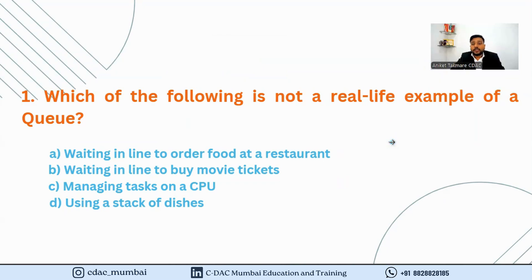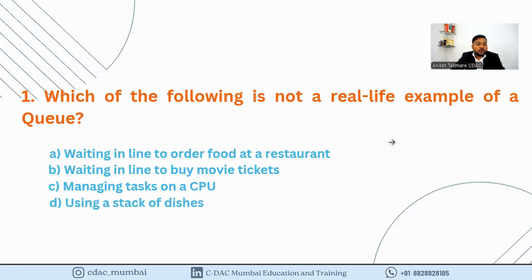The question is: which of the following is not a real-life example of a queue? A queue is a data structure which follows the FIFO principle — First In, First Out. The options are: A) waiting in a line to order food at a restaurant, B) waiting in a line to buy movie tickets, C) managing tasks on a CPU, and D) using a stack of dishes. The first three options follow the FIFO principle, so the correct answer is option D.